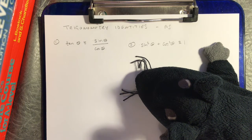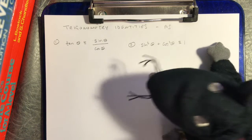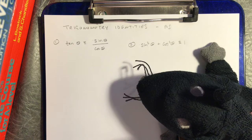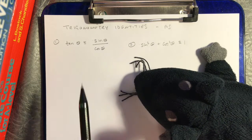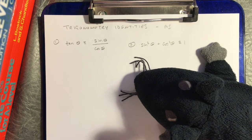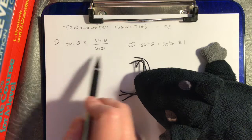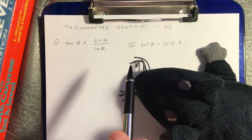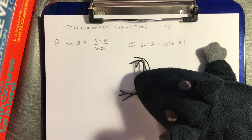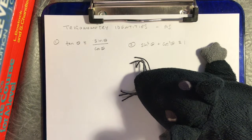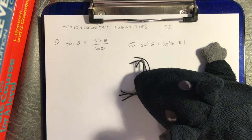Welcome to some more math with a black rat. In this video, Zeke and I are going to show you two trigonometric identities that you need to know and that are used a lot at AS level when you do A level math. I'm going to start with the proof of the first one, then a proof of the second one, and then we'll look at using them in some examples for how you can solve equations using these identities.